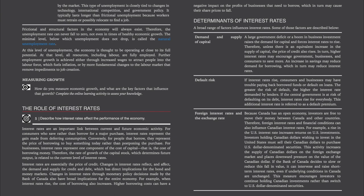Section 5: The Role of Interest Rates. Interest rates are an important link between current and future economic activity. For consumers who save rather than borrow for a major purchase, interest rates represent the gain made from deferring consumption. Conversely, for people that borrow, they represent the price of borrowing to buy something today rather than postponing the purchase. For businesses, interest rates represent one component of the cost of capital — the cost of borrowing money. Therefore, the rate of growth of the capital stock, which determines future output, is related to the current level of interest rates.